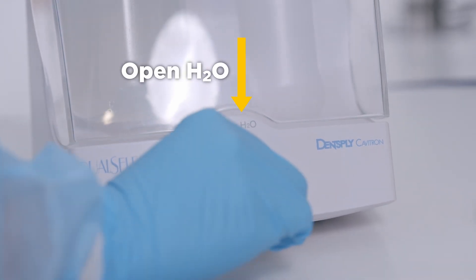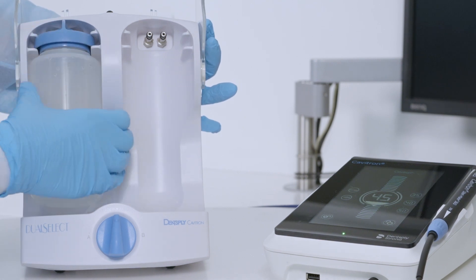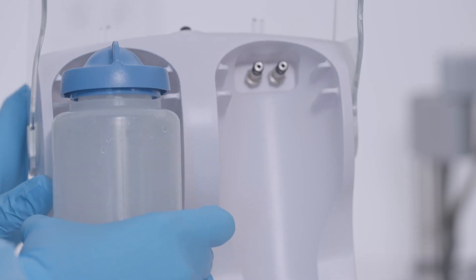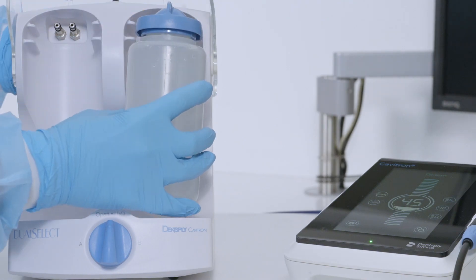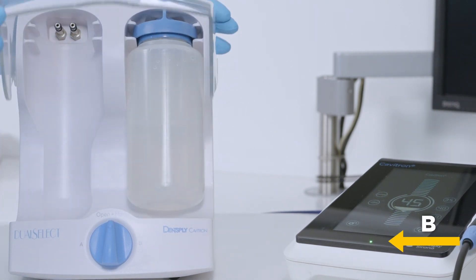Set the selector knob to open H2O position. Open the shield. Remove the clean water bottle from position A and place it in position B. Close the shield and set selector knob to B.